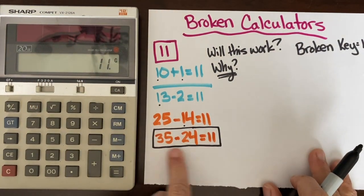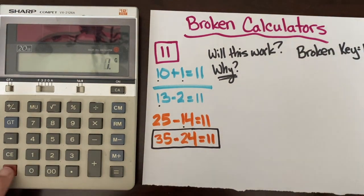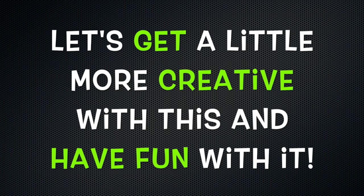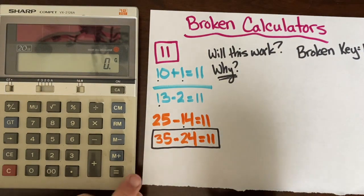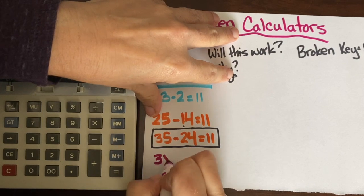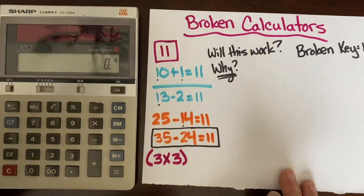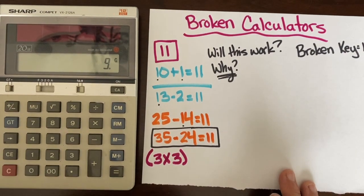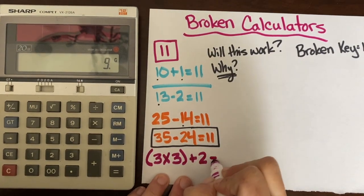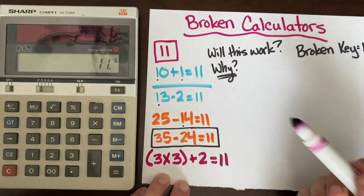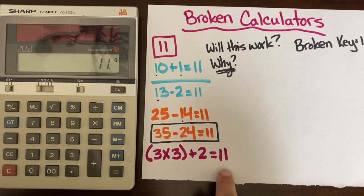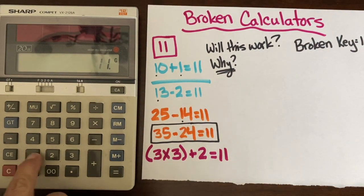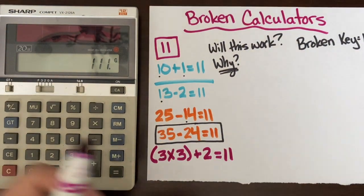Let's get a little more creative. Let's try three times three — I know that 3 times 3 is 9. How many more do I need to get to 11? I need two more. So 3 times 3 plus 2 equals 11. Will it work and why? Yes, for two reasons: number one, it results in 11 as our total; and number two, there is no one key used at all. So that will work — now we have two different ways.